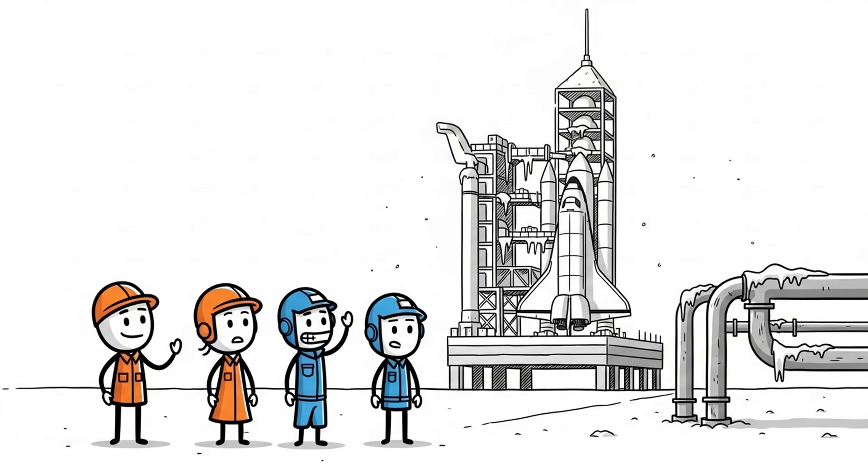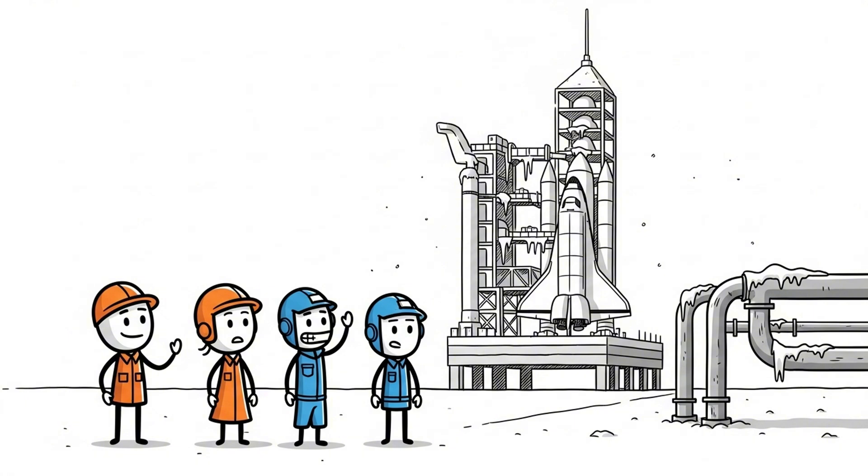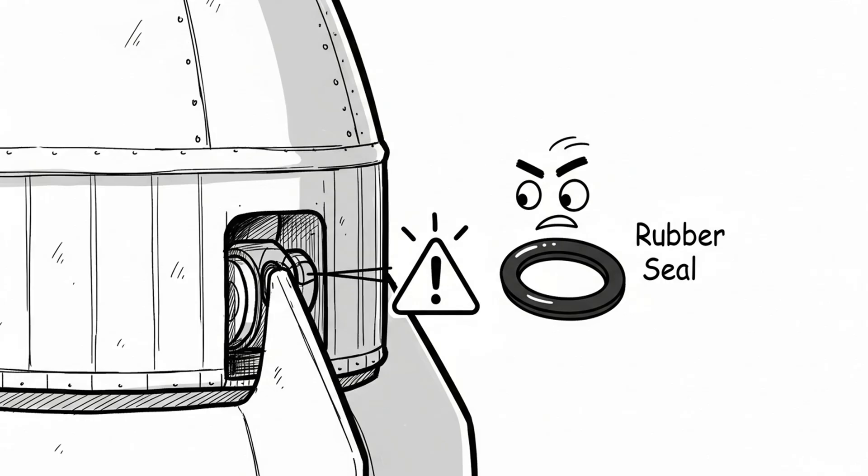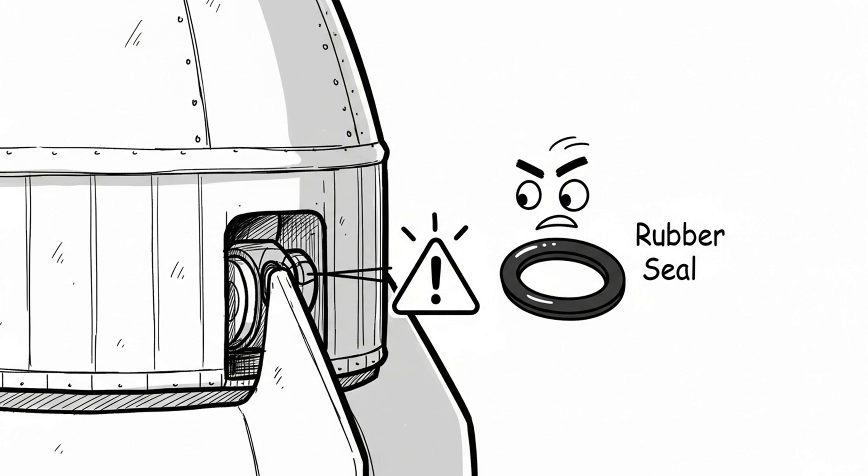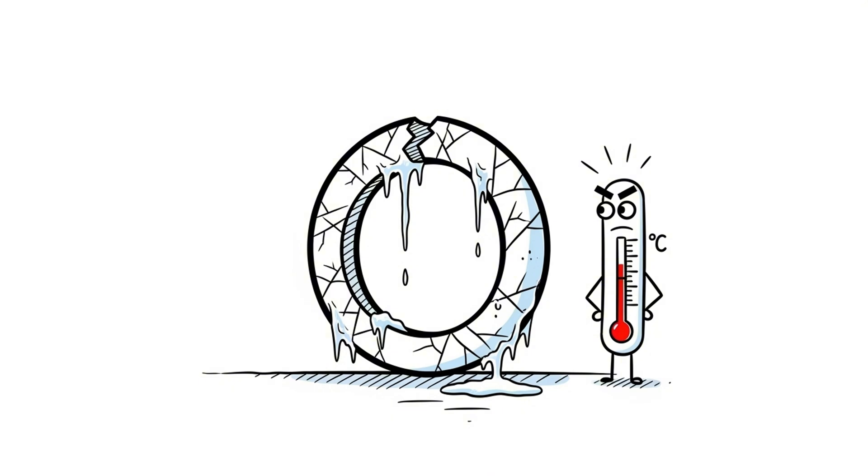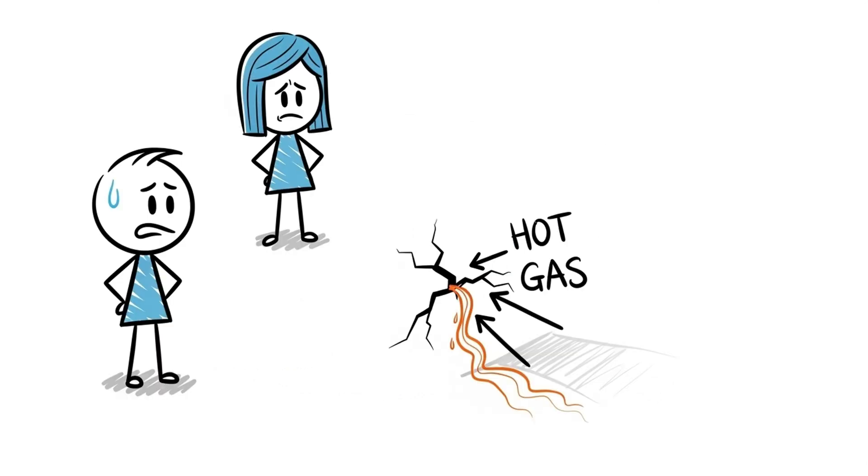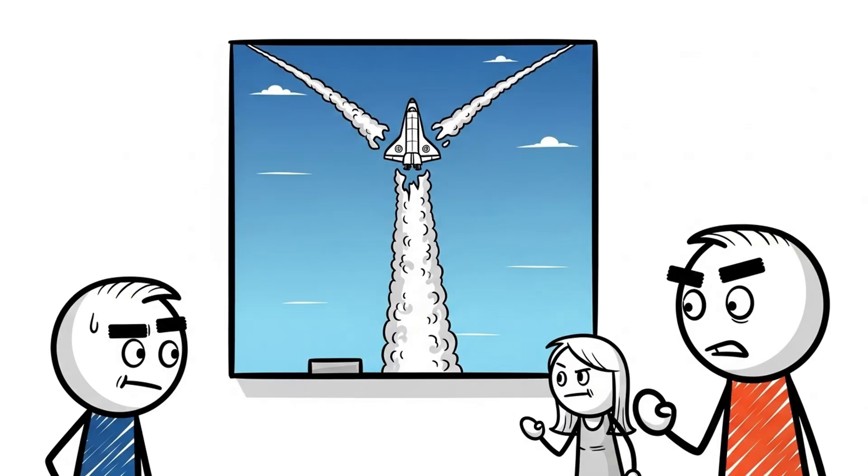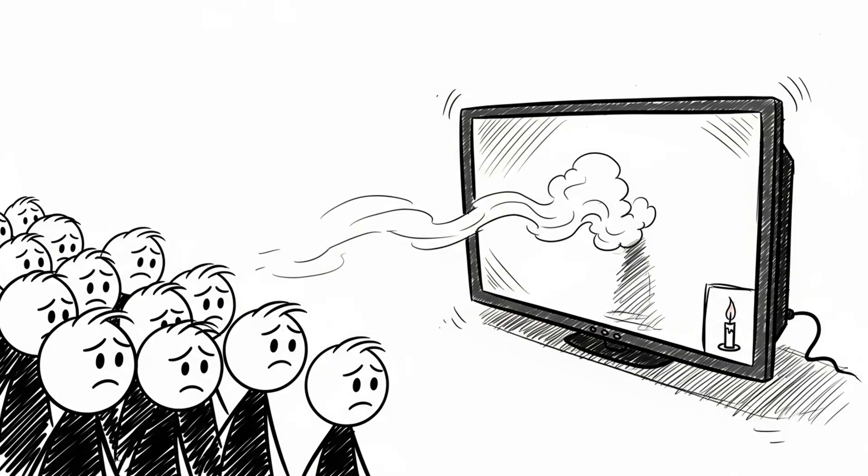January 28, 1986. A cold morning in Florida. The Challenger Space Shuttle was ready for launch. It was supposed to be historic. The first teacher was going to space. But hidden inside the rocket boosters was a tiny flaw. The shuttle's boosters were sealed with rubber O-rings, designed to keep super hot gases from leaking out. But that morning, it was unusually cold. Too cold for rubber to stay flexible. 73 seconds after liftoff, hot gases slipped past the seal. A fire pierced the fuel tank. The shuttle broke apart in midair. All seven astronauts on board were killed. Live on national television.